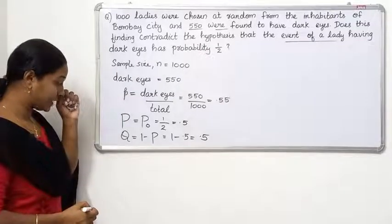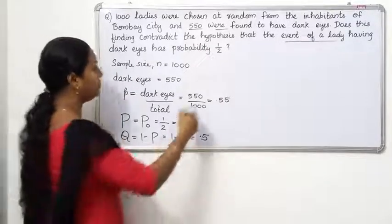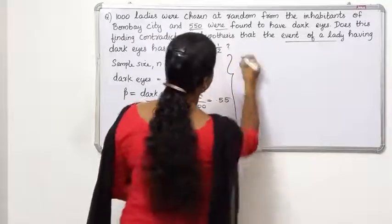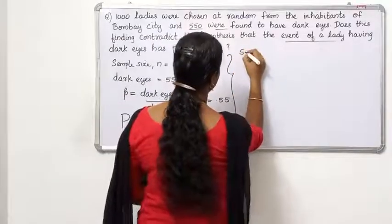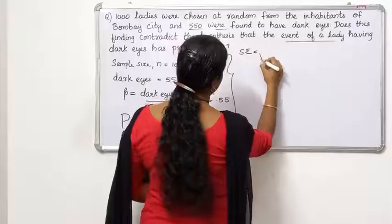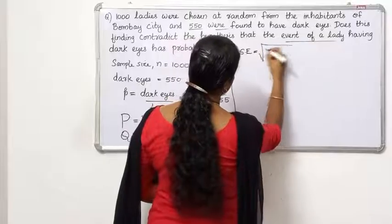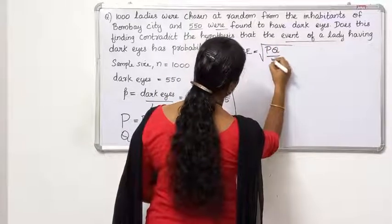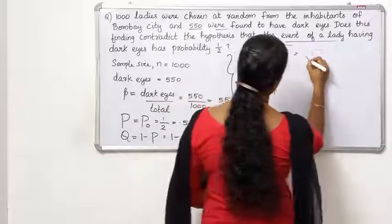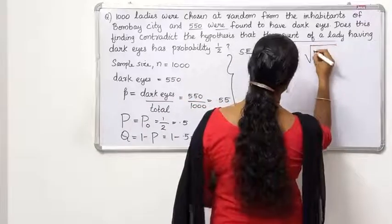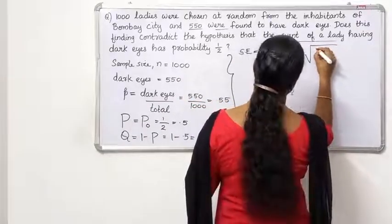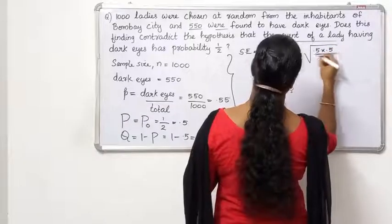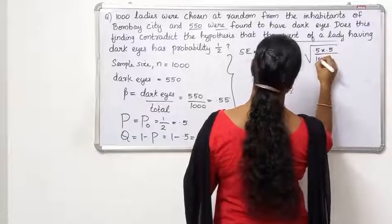Now let's look at the standard error formula for the population proportion test. The standard error is the square root of PQ by N, where P is 0.5, Q is 0.5, and N is 1,000.